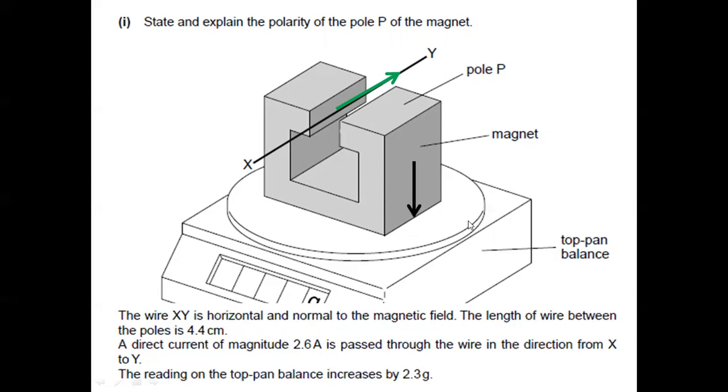Now, what was the origin of the force that pushed the magnet down? Remember that when current is present in a wire like this, this wire XY, that wire will then set up its own magnetic field.